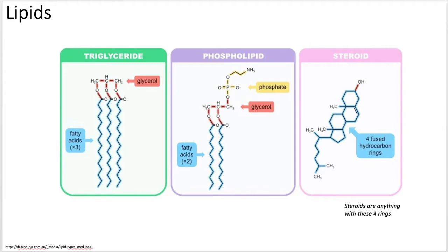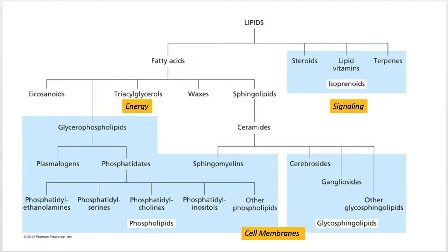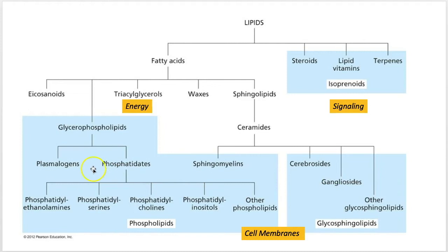Once we understand a lot about fatty acids, we can understand better about triglycerides and phospholipids — hence why we're going to spend a lot of time talking about fatty acids. I'm going to slowly expose you to the massive amounts of lipids that exist. It can be super overwhelming. Everything is encompassed under lipids — things with fatty acids in them. We're going to encompass phospholipids and sphingolipids, lumping those together with things associated with the cell membrane. Triacylglycerols are your energy storage.